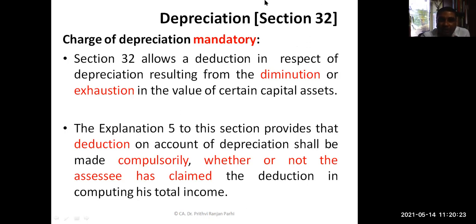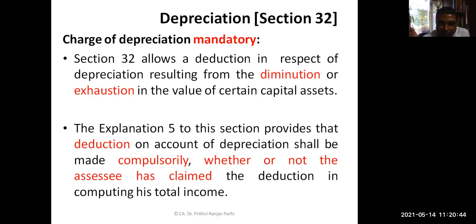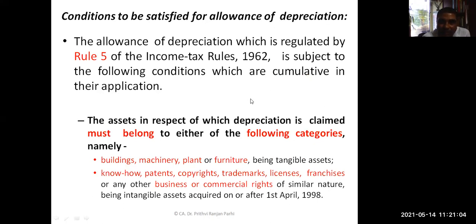Section 32 allows deduction in respect of depreciation resulting from the diminution or exhaustion in the value of certain capital assets. Explanation 5 to that section provides that it is a compulsory deduction whether or not the assessee has claimed it — the deduction shall be allowed in order to compute total income. There are certain conditions which need to be satisfied, and we need to go through Rule 5 of the Income Tax Rules 1962 to understand the concept of depreciation.